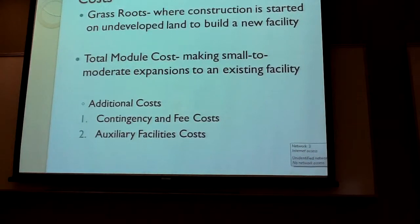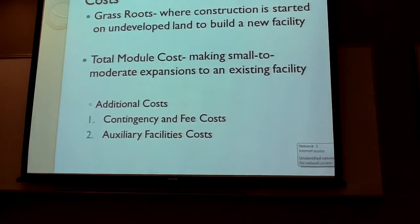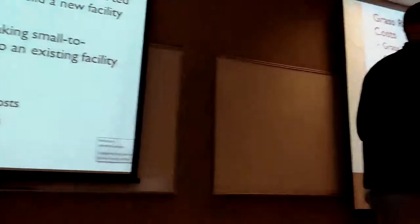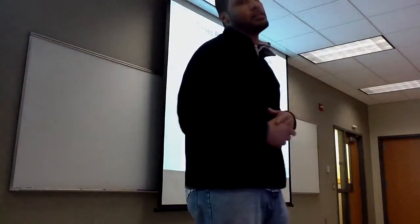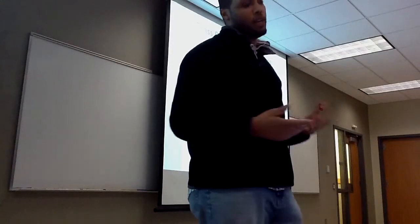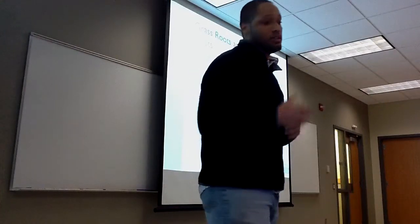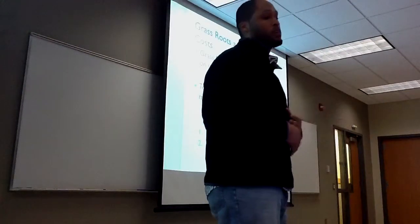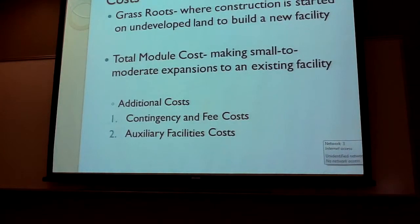Next, they talked about how to calculate grassroots and total module costs. Grassroots refers to where construction starts on undeveloped land to build a new facility — your plant. Total module cost involves making small to moderate expansions to an existing facility, such as adding a new building or a new reactor to a plant site. These costs — grassroots and total module costs — require adding additional costs such as contingency fee costs and auxiliary facility costs.